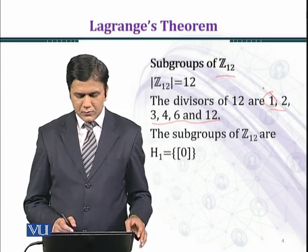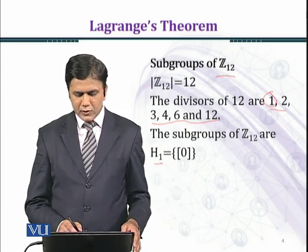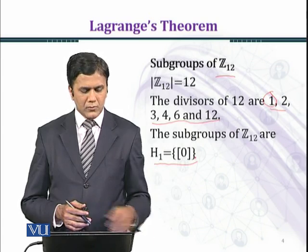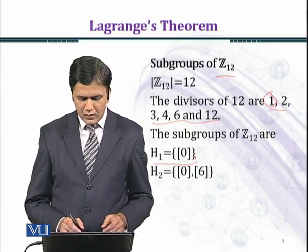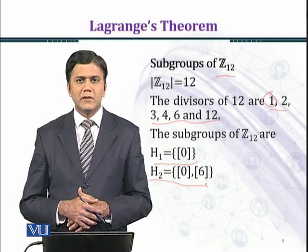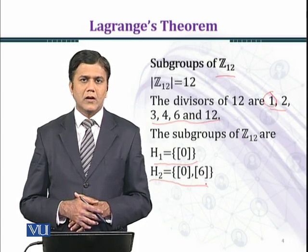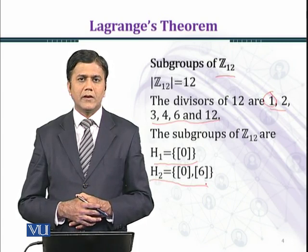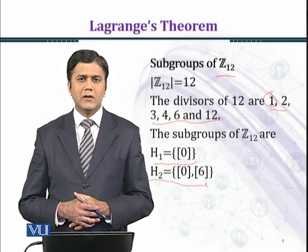The subgroups of Z₁₂ are: H₁ equals the singleton {0}, H₂ equals {0, 6}. So if you will add 6 to 6, then it will be 12 and you will get the identity element.